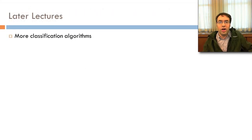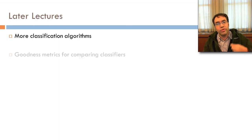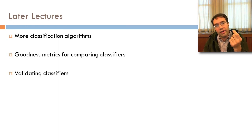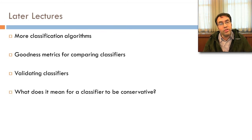In later lectures, I'll talk about more classification algorithms, goodness metrics for comparing classifiers, how we validate classifiers, and what it means for a classifier to be conservative — why do I keep saying that?